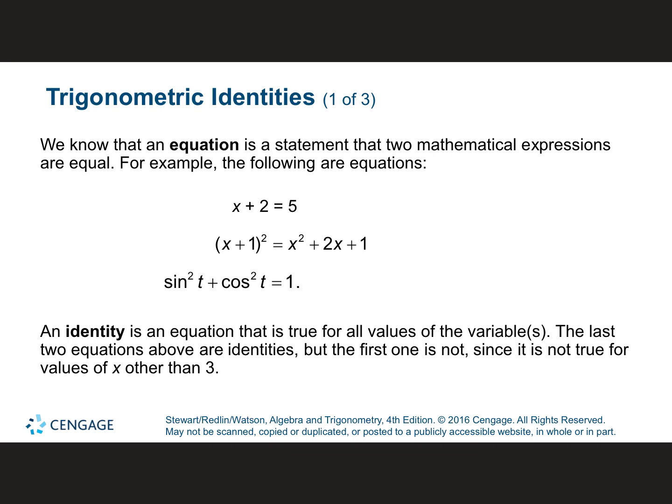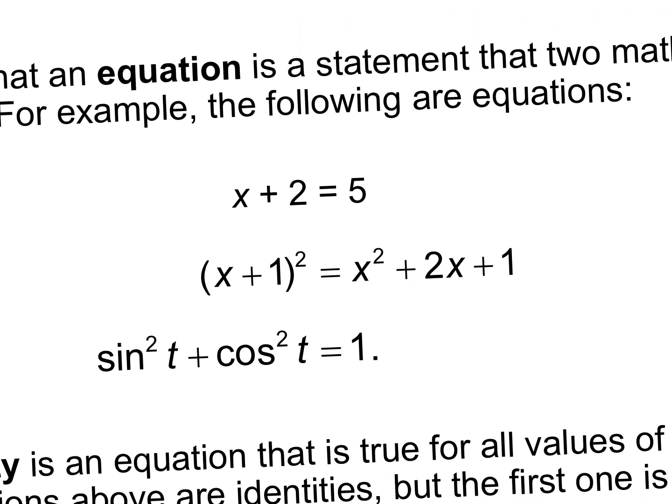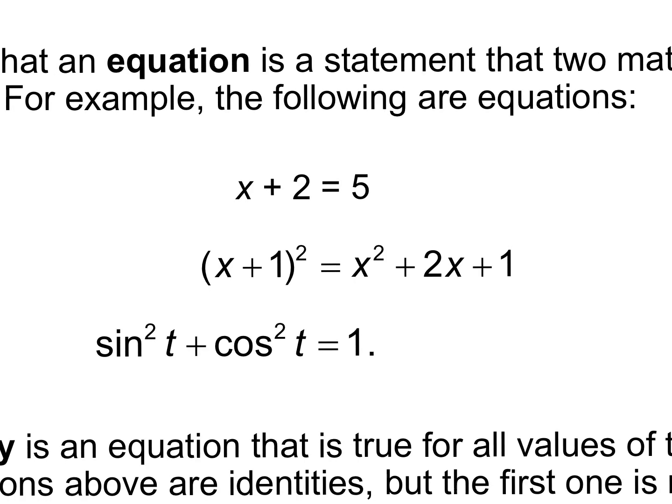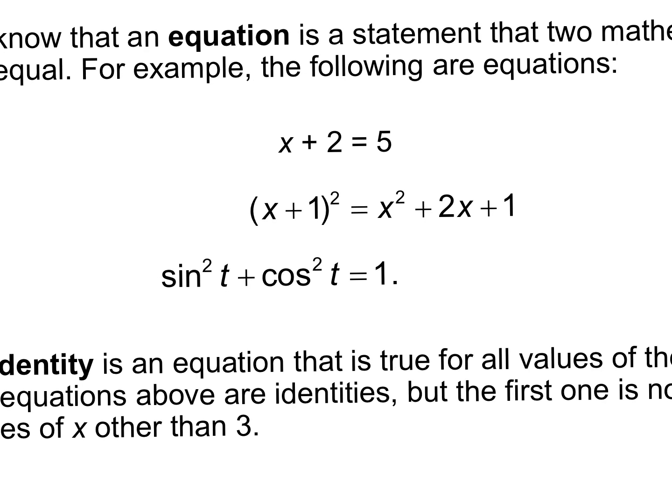We're talking today about simplifying trigonometric expressions — we'll do verifying later in the week, but just simplifying for now. Here's an equation: x plus 2 equals 5 — you can all solve for x. The equal sign means the left-hand side is the same as the right-hand side. We're going to take trig identities and simplify big, long trig equations into little, tiny trig equations.